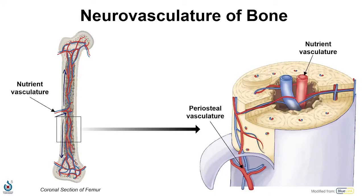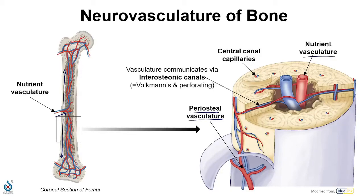If we zoom in on the diaphysis, we'll see the branches of the nutrient vasculature within the medullary cavity. Other branches remain superficial and supply more of the external surfaces of bones, like the periosteal vasculature that runs right within the periosteum. Each individual osteon is supplied by capillaries within its central canal. Running perpendicular to the bone are communicating branches that run through inter-osteonic canals, connecting the many sources of blood.